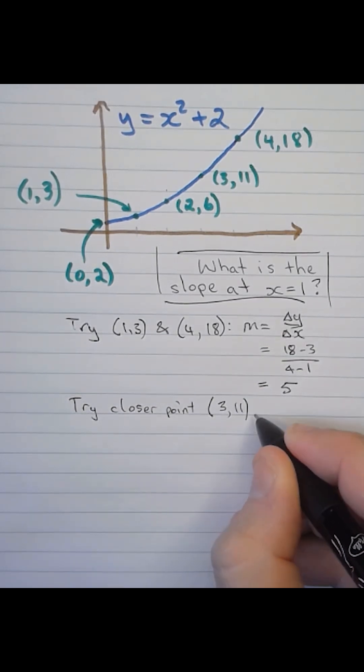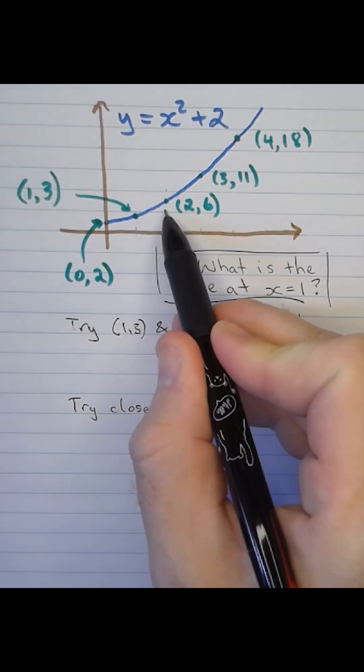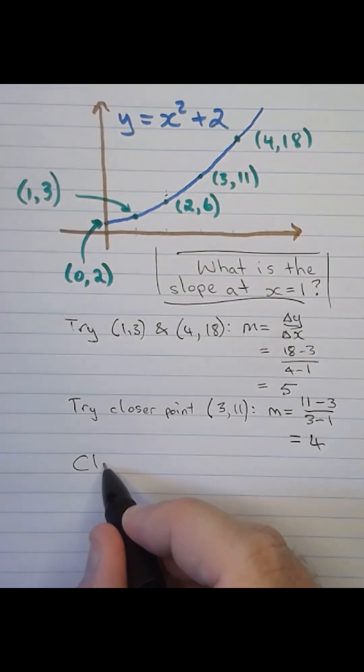So let's try a closer point to (1, 3). That'd take us closer because if we went across one, we'd go up 4, but it's still not right.